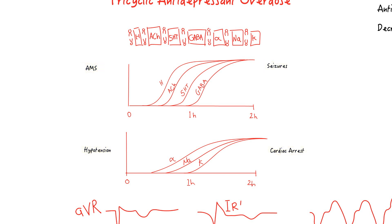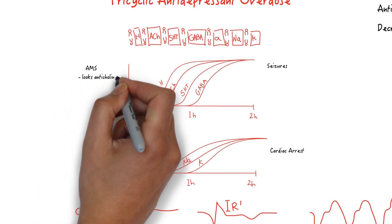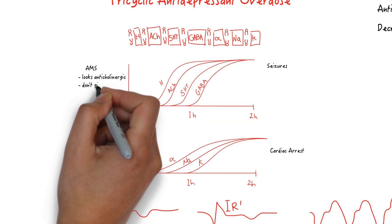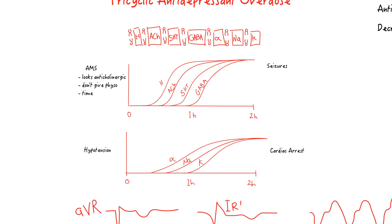For altered mental status, they look anticholinergic, but definitely do not give physostigmine because you can precipitate seizure. The treatment is time.